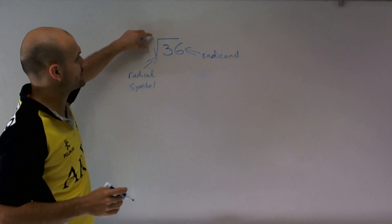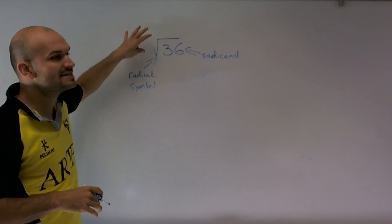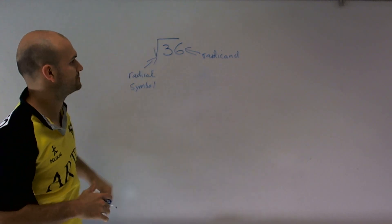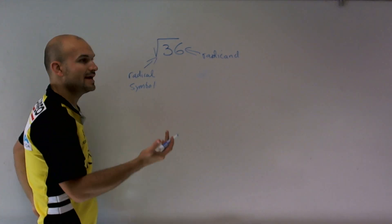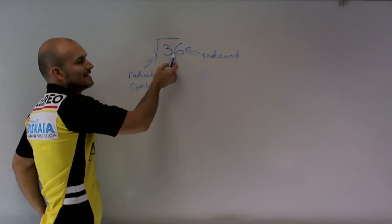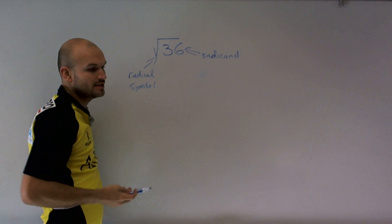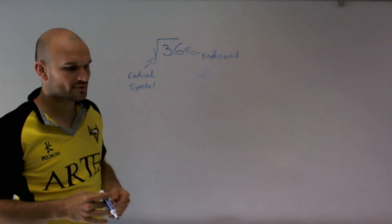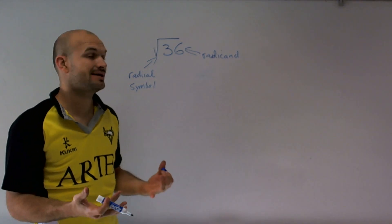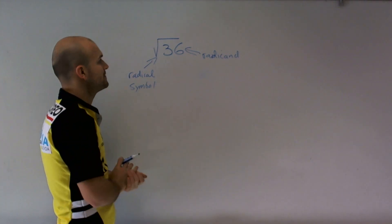What this radical symbol means is: how many times am I going to have to multiply a factor of the radicand by itself to get the radicand? What we need to think of is that the number has to be that same factor.